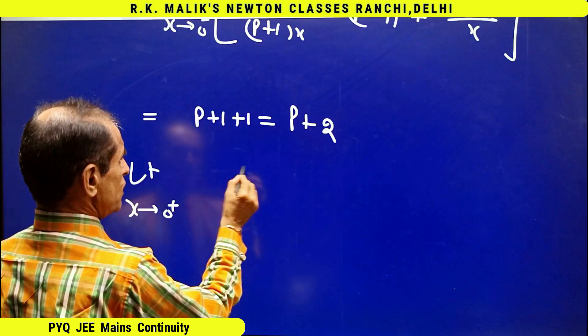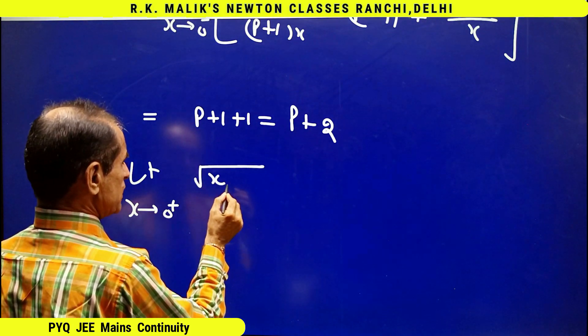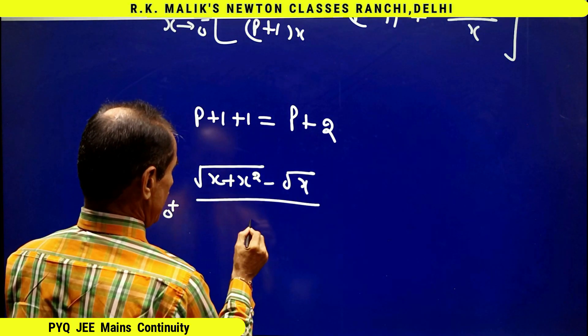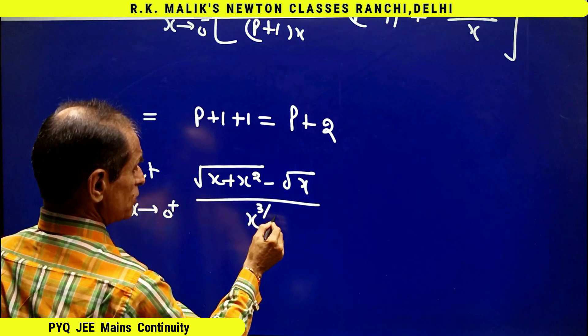It is √(x + x²) - √x upon x to the power 3/2.